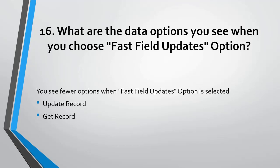What data options do you see when you choose the fast field update option? When you define the start of your flow and choose the fast field update option, in the data section element you will see only update record and get record.